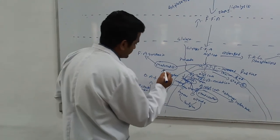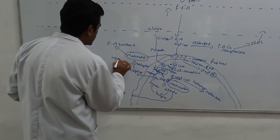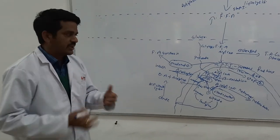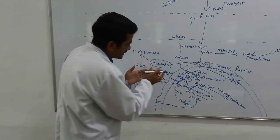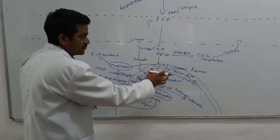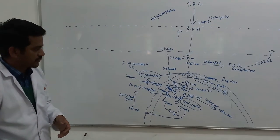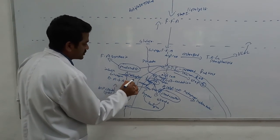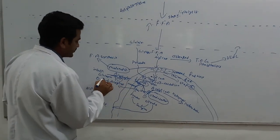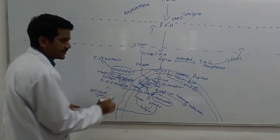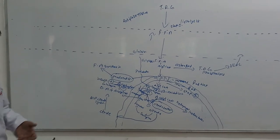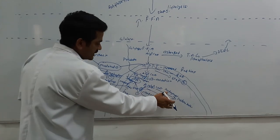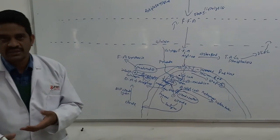Insulin in the fed state mainly enhances acetyl-CoA carboxylase to form malonyl-CoA. When malonyl-CoA is present, it is useful for fatty acid synthesis and ultimately inhibits carnitine palmitoyltransferase-1 in the fed state. When insulin is not available, glucagon is very high. Glucagon inhibits acetyl-CoA carboxylase — insulin has a positive effect upon carboxylase and glucagon has a negative effect. So when malonyl-CoA is not there, there is no inhibitor of CPT-1, and therefore ketogenesis is enhanced.